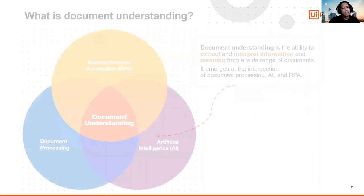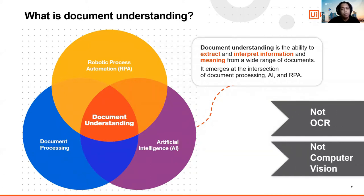So what really is document understanding? A common misconception is that it's just OCR. The short answer is: definitely not. OCR is just the preliminary part — it's the conversion of an image to machine-readable text to be processed in the DU framework. OCR comes in handy in the digitize step when dealing with non-native documents, such as scanned images or other file types that are not digitized.